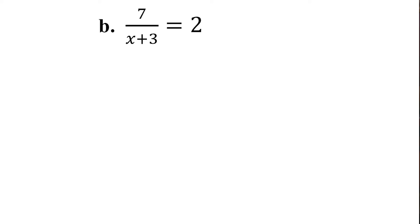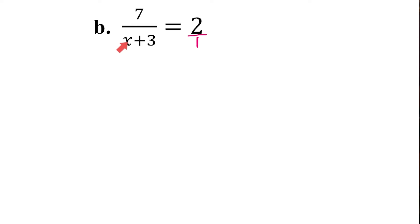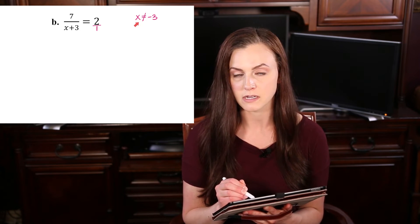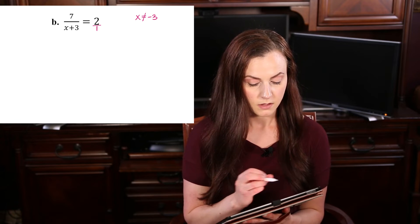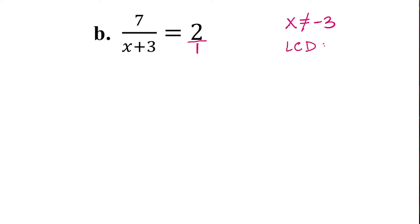If I come over to this next one, we have 7 over x plus 3 equals 2, and this is 2 over 1. We have another restriction on this one, because we have this x plus 3 in the bottom. What would we plug in for x to make this a 0? We would plug in a negative 3, because negative 3 plus 3 is 0. So off to the side I'm going to write that x cannot be equal to negative 3. The least common denominator is just this x plus 3.